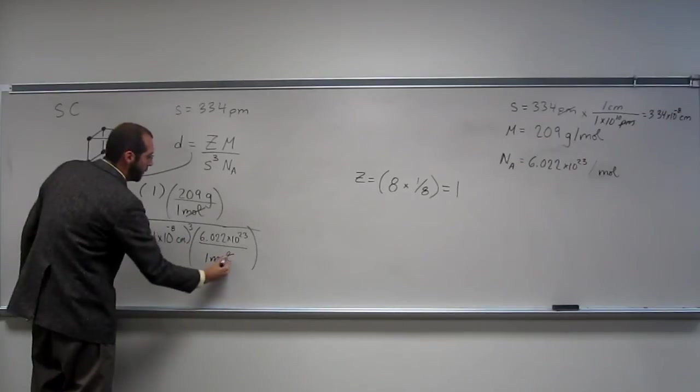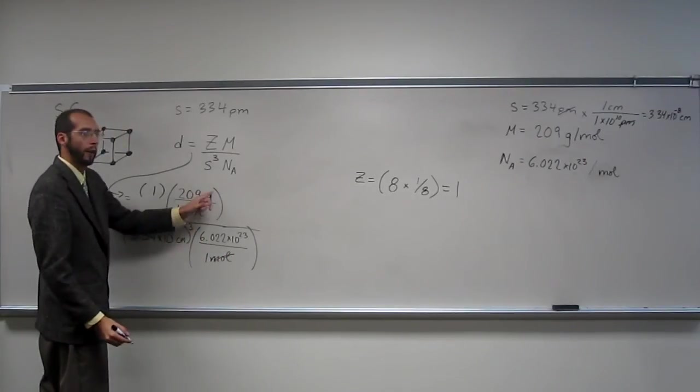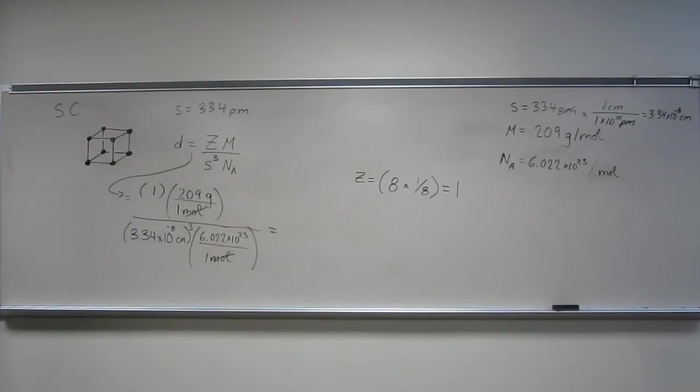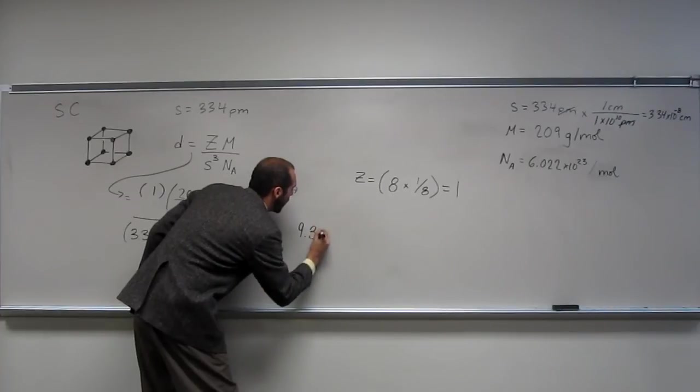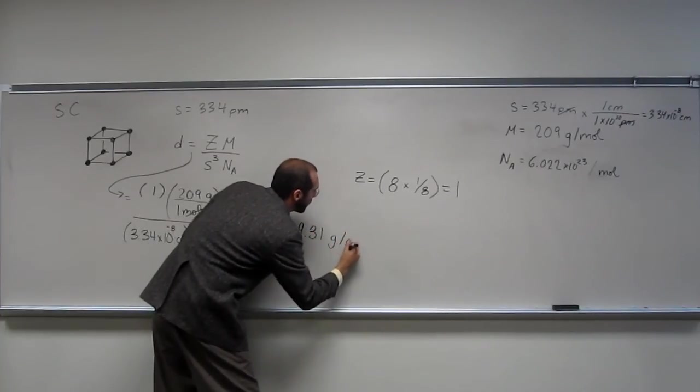Cool with that? So, notice, cancel there. Mole, mole. And what did we get? Centimeters cubed down here and grams up there. So, let's go about chugging now. So, one times 209 is 209. So, 3.34 e negative eight to the third. 209 divided by that. And I get an answer that we're going to do three sig figs, right? Since 334 was given to us is 9.31 grams per cubic centimeter.